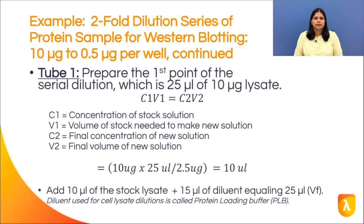The final volume that remains in each tube is 12.5 microliters. Let's prepare the first tube of the serial dilution. The math for this tube is slightly different than the rest, since the move volume comes from the original stock of 2.5 micrograms per microliter. Since the highest concentration we need is 10 micrograms, we calculate how much stock lysate is needed to get 10 micrograms in the first tube with a final volume of 25 microliters. For this, we use the classic dilution formula C1V1 = C2V2, where C1 is the concentration of the stock, V1 is the volume of stock needed, C2 is the final concentration, and V2 is the final volume. Using this formula, we find that we need 10 microliters of the stock.